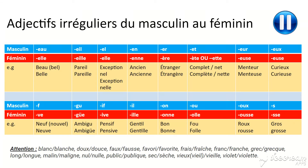Now, there are of course even more exceptions. I've added a few lists. You already know: blanc becomes blanche; doux becomes douce; faux becomes fausse; favorit becomes favorite; frais becomes fraîche; franc becomes franche; grec becomes grecque; long becomes longue; malin becomes maligne; nul becomes nulle; public becomes publique; sec becomes sèche; vieux becomes vieille; violet becomes violette. So think about the silent consonant at the end of the adjective.